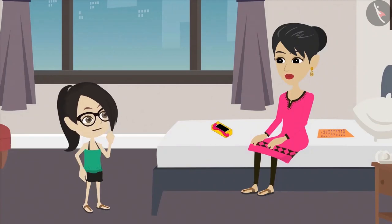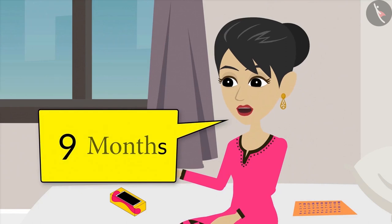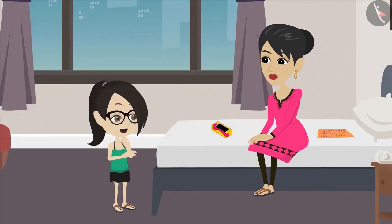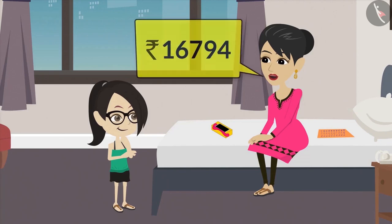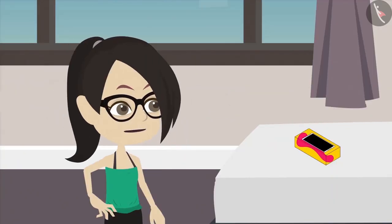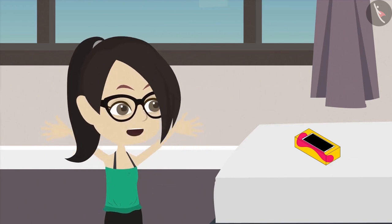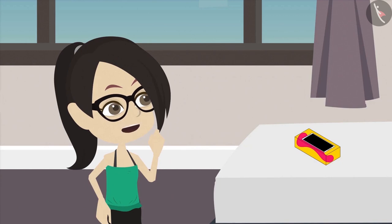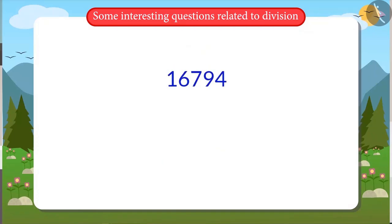Vandana asks: 'For how many months do you have to pay the installment?' Mother replies: 'I have to pay for 9 months, and the total amount I have to pay is 16,794 rupees.' Vandana reasons that to find out how much money to pay every month, you have to divide 16,794 by 9.